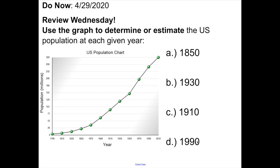What we're going to do here is determine or estimate the U.S. population at each given year based on this graph. This is the graph of the U.S. population where the population is in millions, and the year is given below.